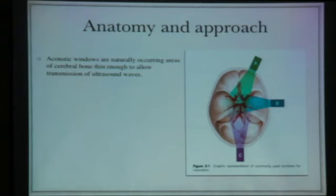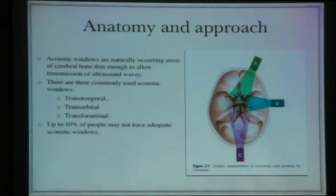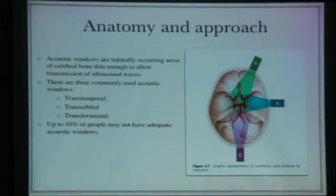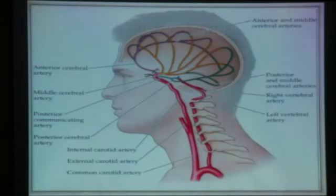We have three different approaches to scan the circle of Willis. The first is the transtemporal acoustic window, the second is transorbital through the ophthalmic artery, and the third is trans-foraminal through the foramen magnum checking the vertebral-basilar system. Transtemporal is used most commonly. Up to ten percent of people don't have a transtemporal window, so don't be frustrated if your first patient shows nothing.